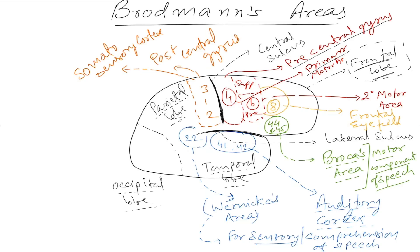Wernicke's area handles sensory comprehension of speech, while Broca's area handles the motor component of speech. There is a very important connection between these two areas formed by an arc of neurons called the arcuate fasciculus. Once Wernicke's area is stimulated, the message is sent through this connection to Broca's area, which helps in formulating the reply to that particular message.